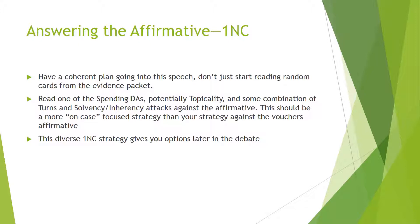So how do we answer the affirmative? First, let's talk about the first negative constructive. It's important to have a coherent plan going into the speech — don't just start reading random cards from the evidence packet. Reading a spending disadvantage, potentially topicality, and some combination of turns and solvency and inherency takeouts against the affirmative are a sound strategy. This is more of an on-case focus than your strategy against the vouchers affirmative, and this diverse strategy gives you options later in the debate.